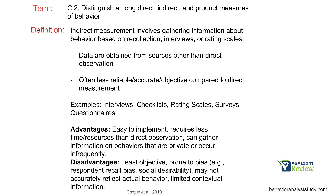Moving on to indirect measurement. Indirect measurement involves gathering information based on recollection, interviews, or rating scales. If we view direct measurement as behavior as it happens, indirect measurement is the opposite — we're not actually observing the behavior. We're looking at all other sources other than direct observation. That could be interviewing a teacher, providing a checklist to close family members, giving a rating scale to the client, or giving a questionnaire to the siblings. We're getting all this secondhand information, but we're not actually observing it. It's going to be less reliable, less accurate, and less objective compared to direct measurement.